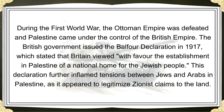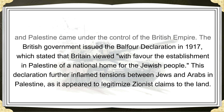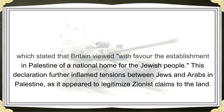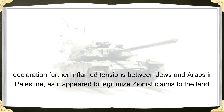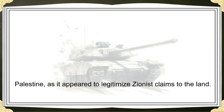During the First World War, the Ottoman Empire was defeated and Palestine came under the control of the British Empire. The British government issued the Balfour Declaration in 1917, which stated that Britain viewed with favor the establishment in Palestine of a national home for the Jewish people. This declaration further inflamed tensions between Jews and Arabs in Palestine as it appeared to legitimize Zionist claims to the land.